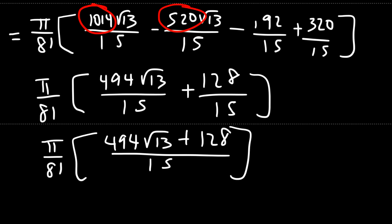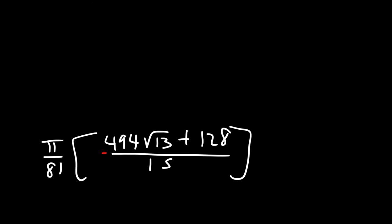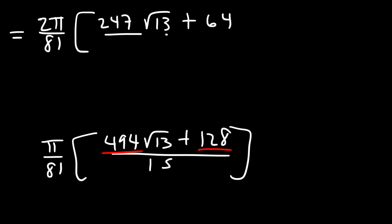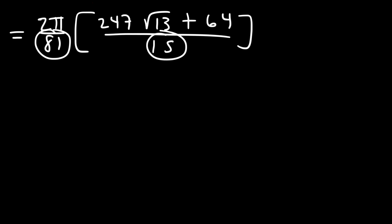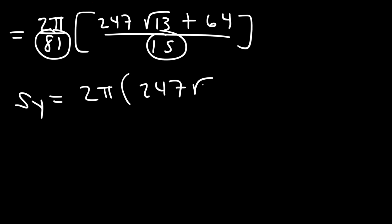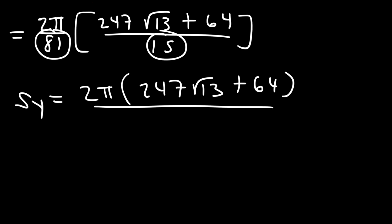Now let's simplify the final answer. 494 and 128 are both even, so I'll factor out a 2, giving 2π out front. 494 divided by 2 is 247, and 128 divided by 2 is 64. Multiplying 81 by 15 gives 1215. So the answer is 2π times (247√13 plus 64) over 1215, which is approximately 4.9364. That's the surface area when rotated about the y-axis.